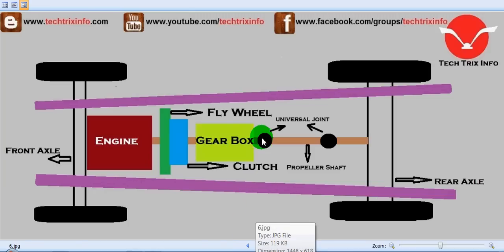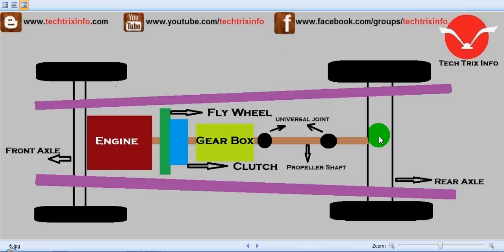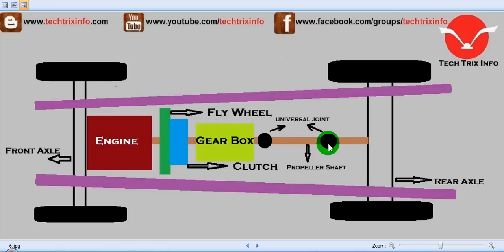After the gearbox we have the universal joint and the propeller shaft. Because there is an angular offset between the gearbox and the rear axle, the propeller shaft connects the gearbox to the rear axle at a particular angle. To accommodate this angle and absorb vibration without affecting the shaft, we employ two universal joints.